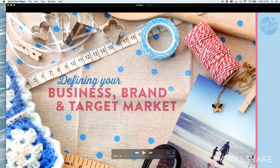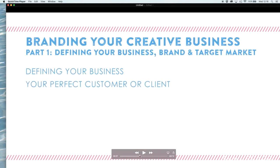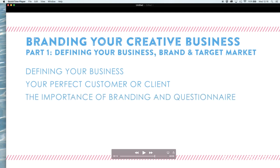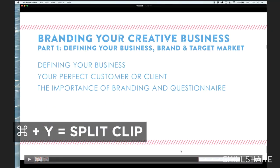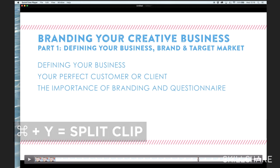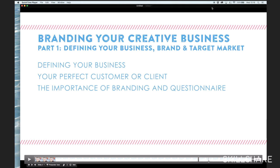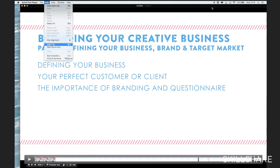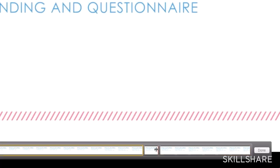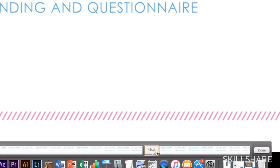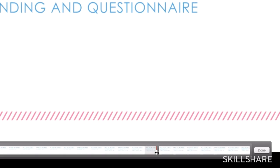If there was part of my recording where I made a mistake I can now find that point and then select Edit, Split Clip, or Apple Y. This will literally split that section. I can then find where I want to start again and do the same. Then you can see we have three clips and I can highlight that middle clip and simply press Delete. You will then want to make sure the remaining two clips have a good smooth transition and it doesn't look or sound weird.